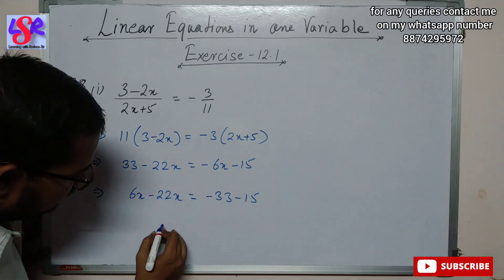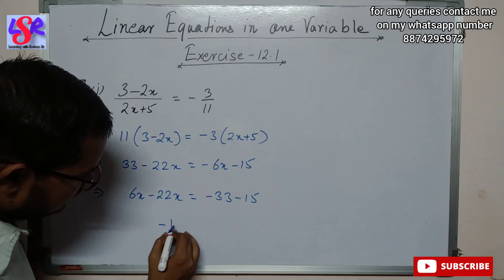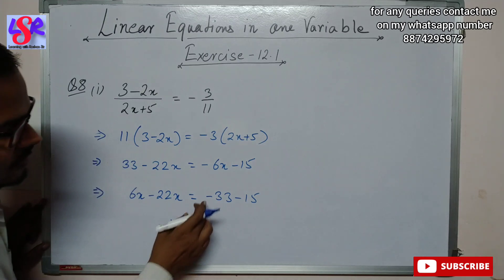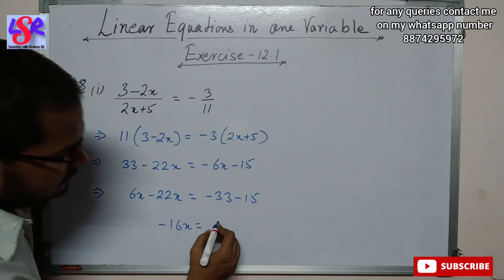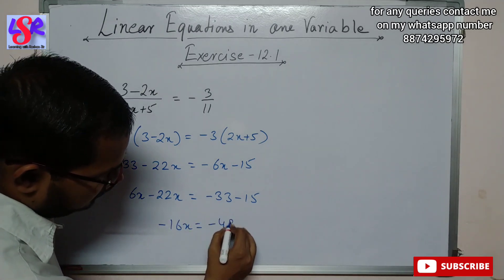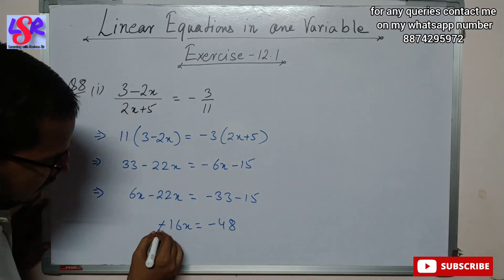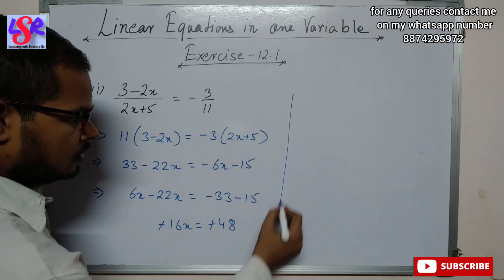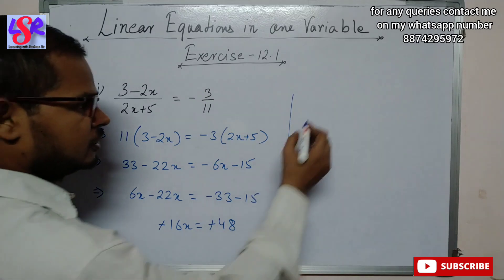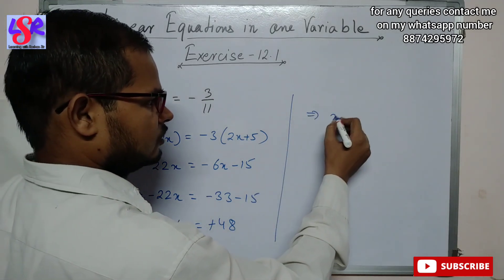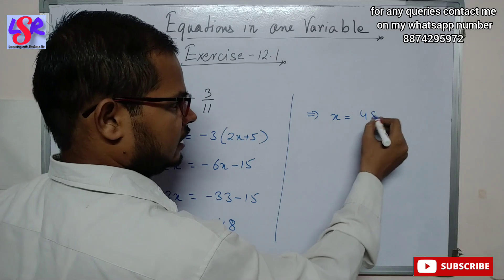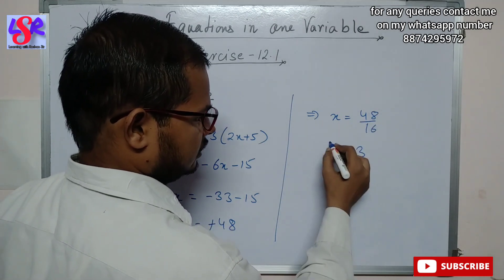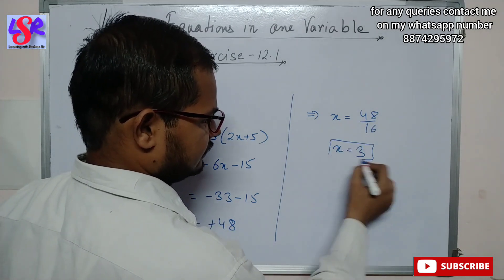Solving this, we get -16x = -48, as both terms have the same sign. The minus signs cancel out and 16 divides 48, giving x = 48/16 = 3 as the answer.